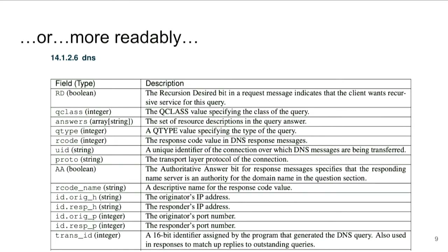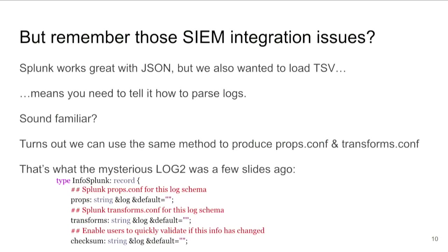This is pretty much where I stopped for a few months because I had achieved the two goals from the beginning. Now in practice, the sim problems were not all solved by having a JSON schema. So it turns out — going back to Splunk — in Splunk you can send stuff in JSON and it's fine, but you can't send in TSV. And for various reasons, you might want to send in TSV instead.